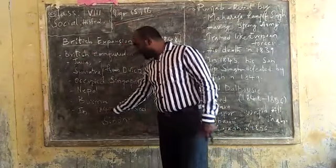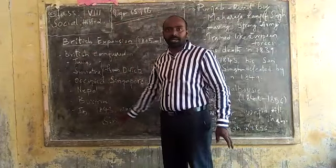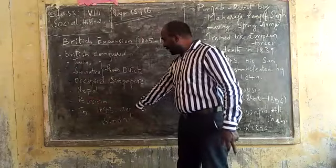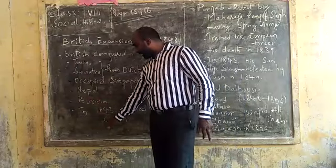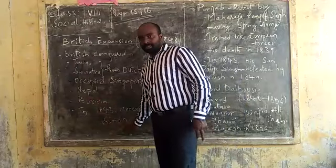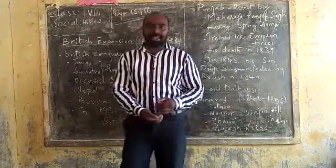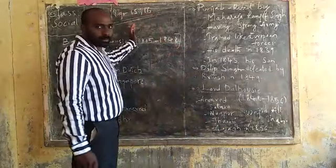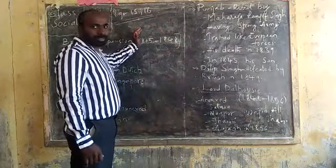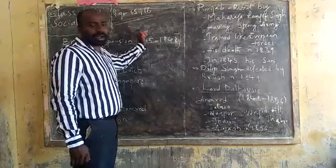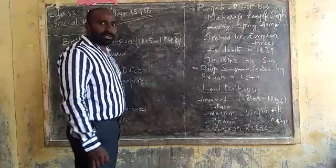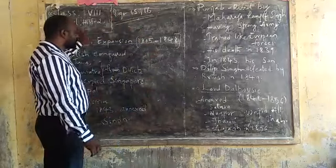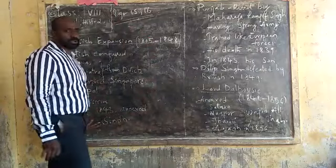Next, here in 1843, Sindh was annexed. Sindh is a river region in the northwestern part of India. So here in 1843, these are all the areas which were occupied.